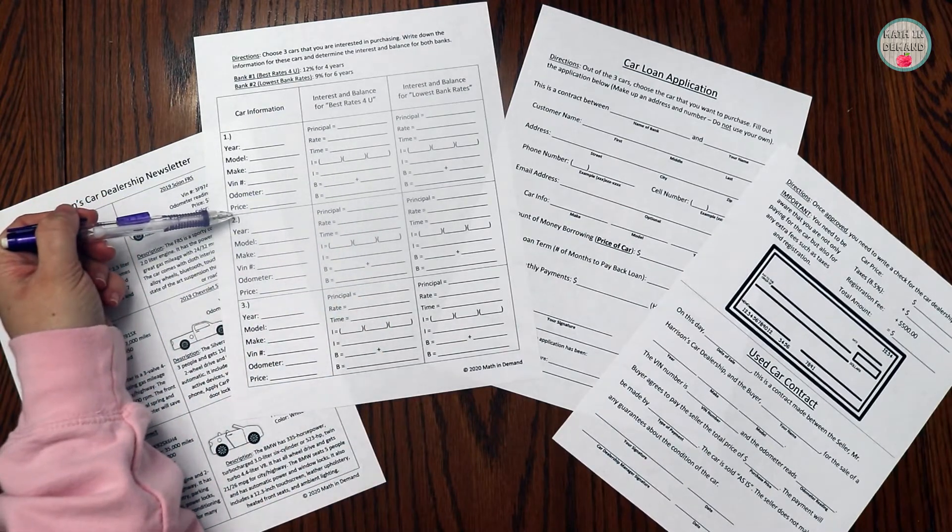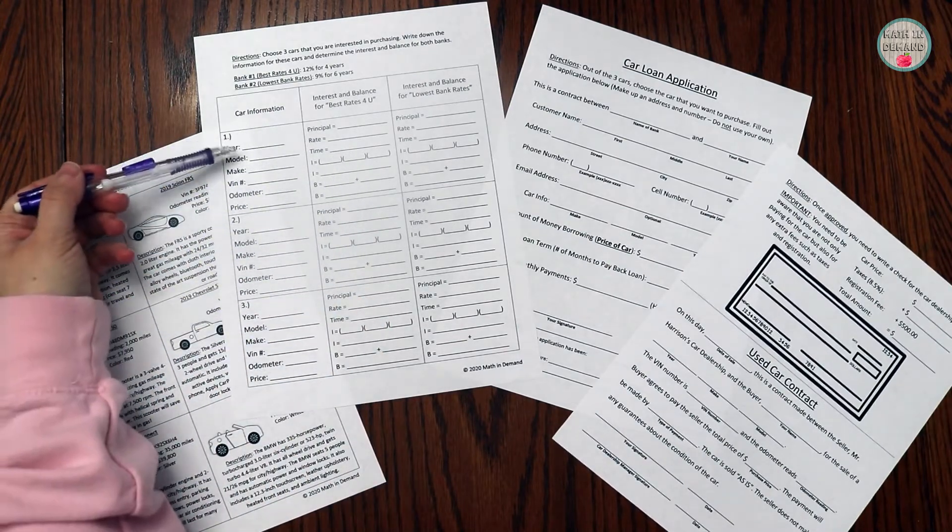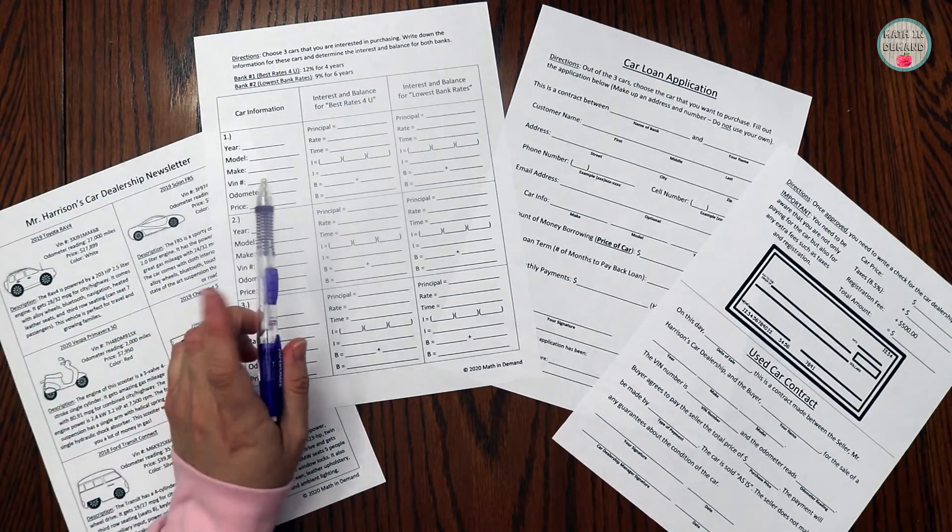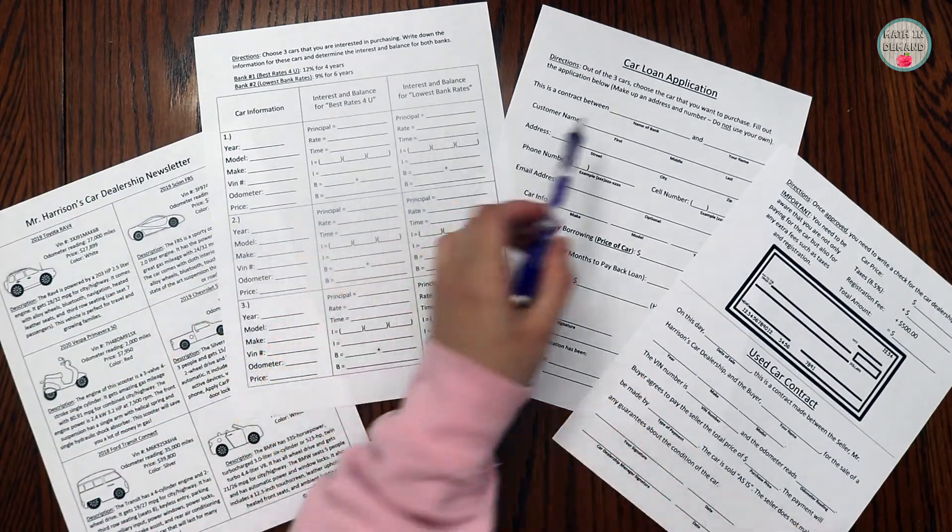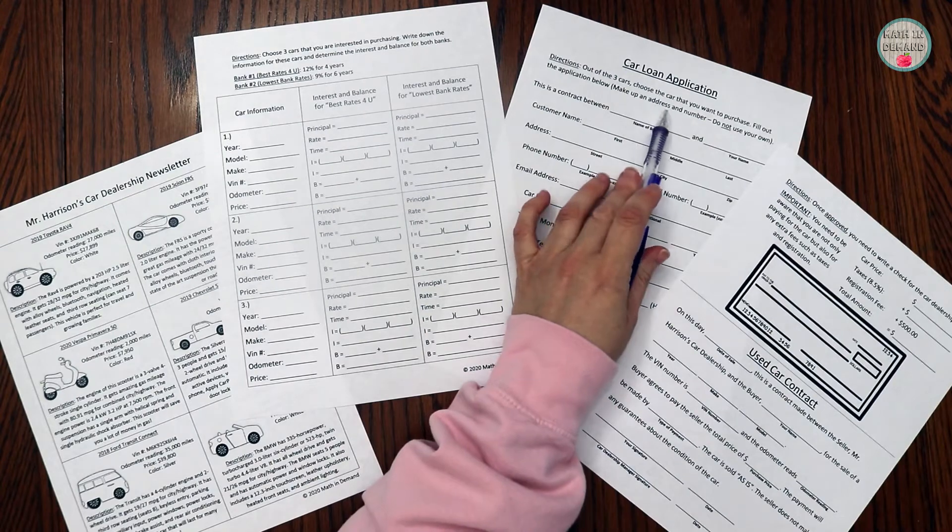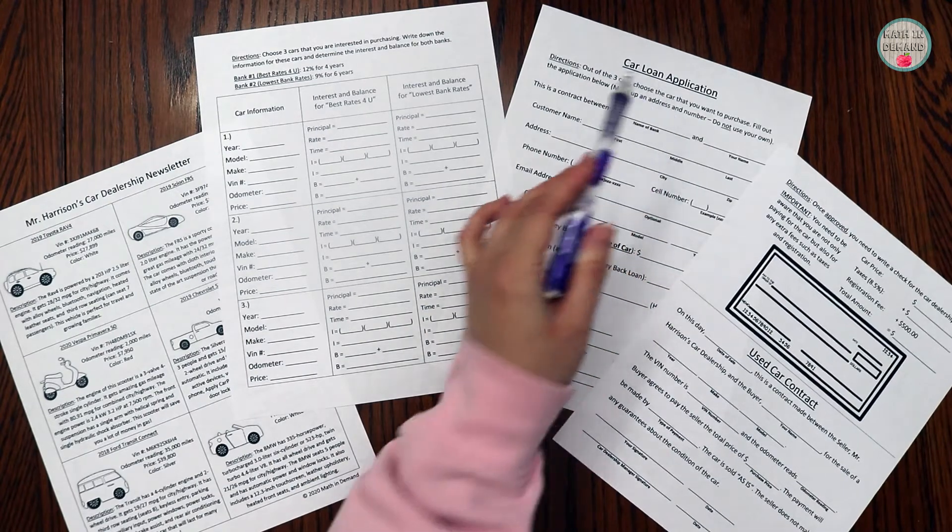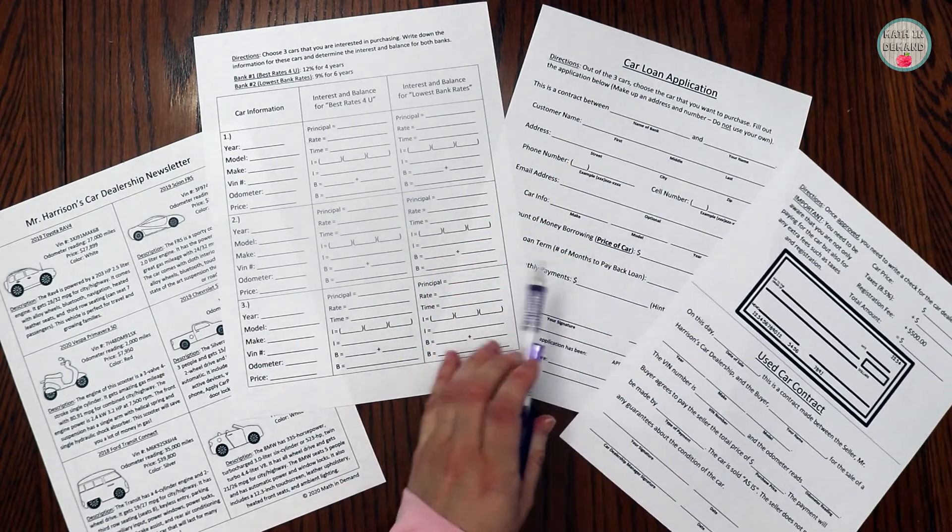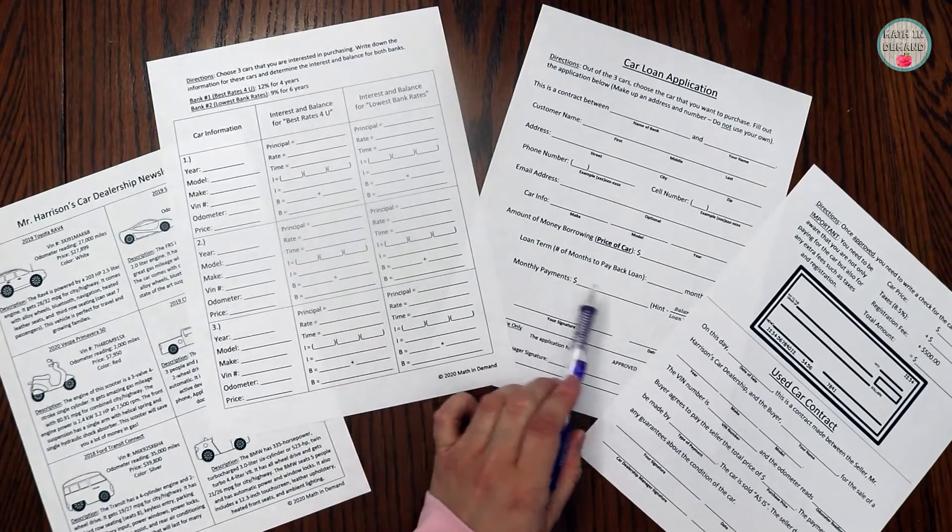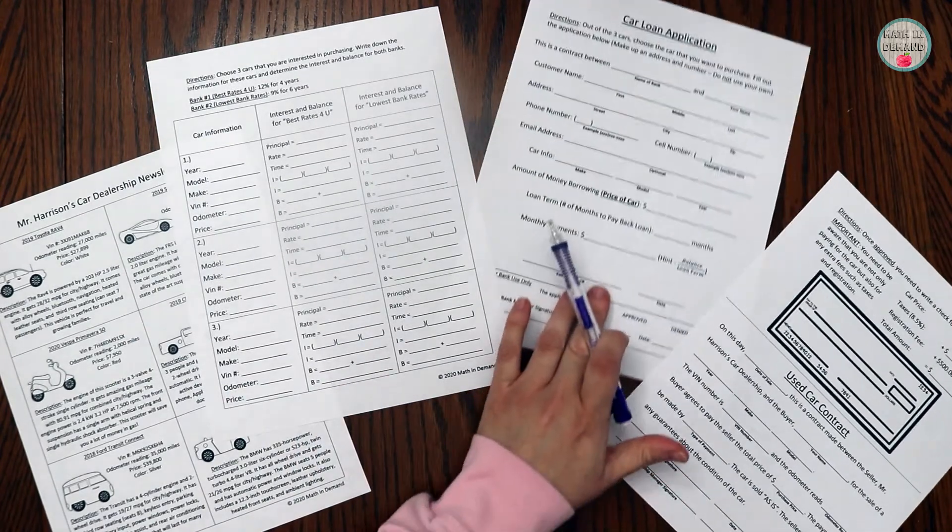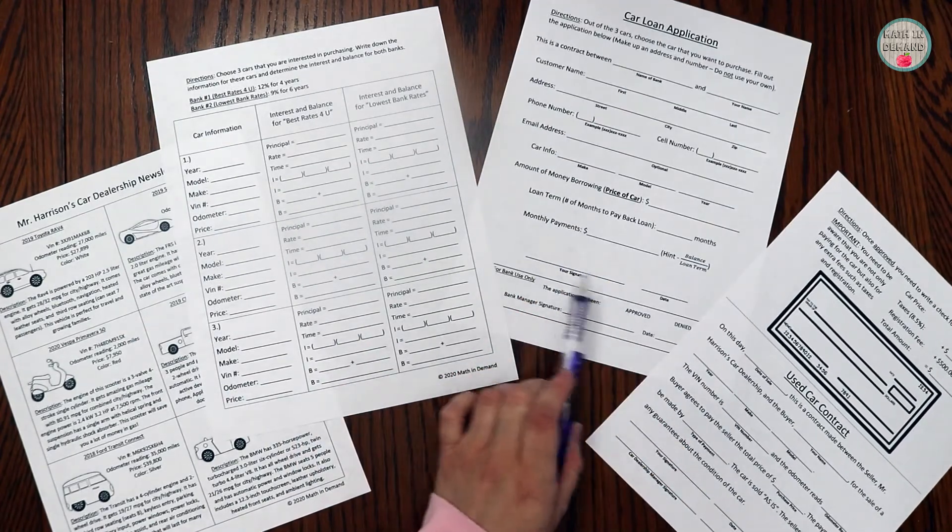And then, students are going to look at those three vehicles and choose just one of them. After they choose one, they are going to fill out a car loan application. For the application, students are going to determine their monthly payments. After they determine the monthly payments, they will sign and date it.